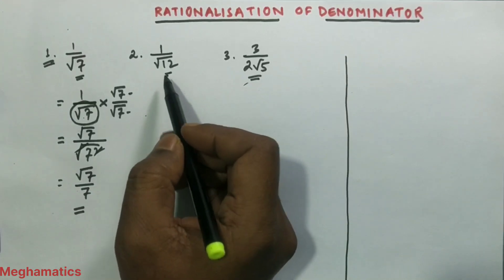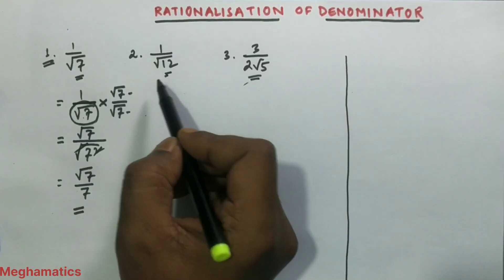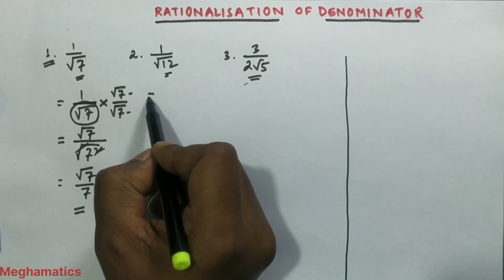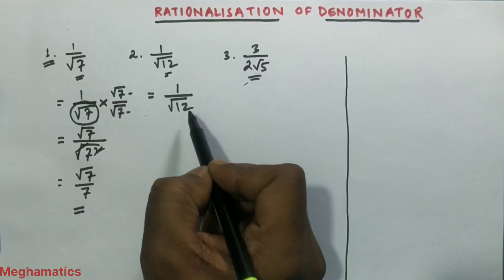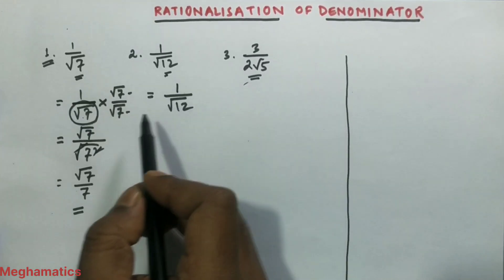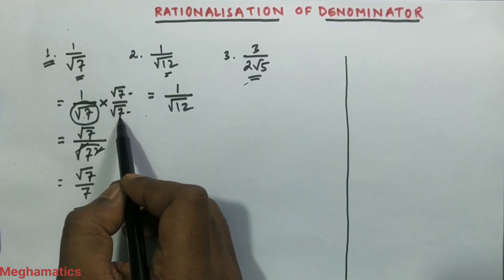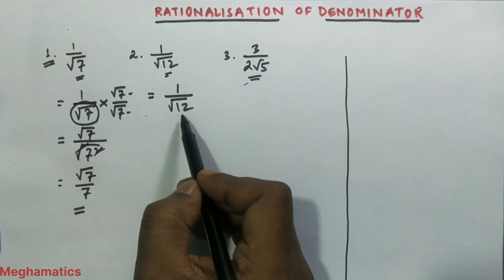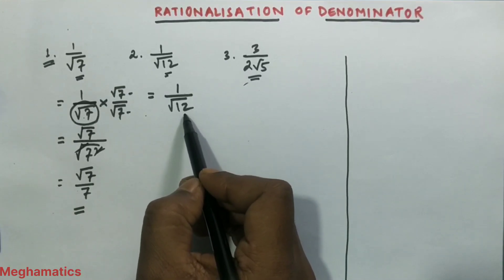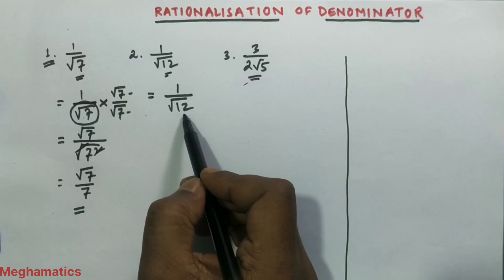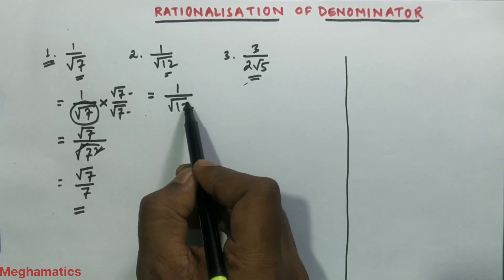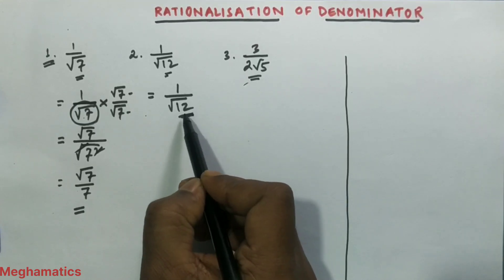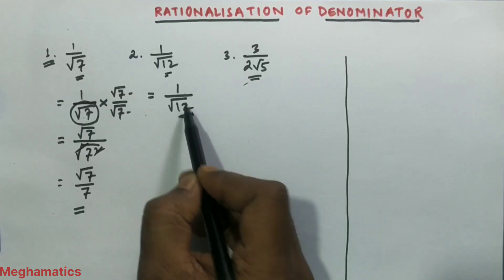Now for question 2: 1 by root over 12. The numerator is 1 and the denominator is 12. Unlike the previous question where 7 was prime, 12 is not a prime number because 12 is divisible by 2, 3, and 4.